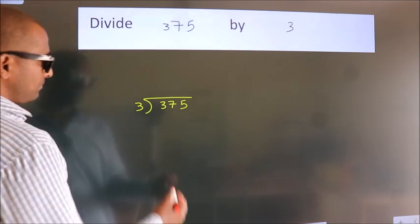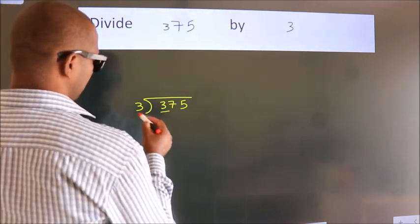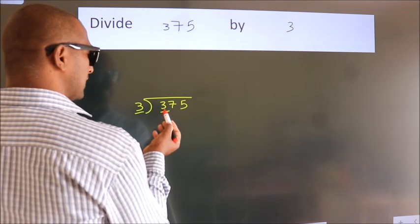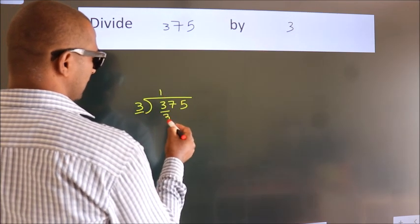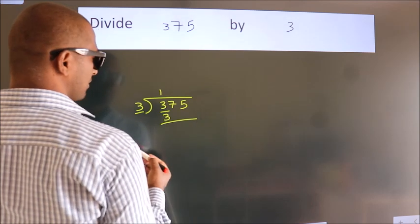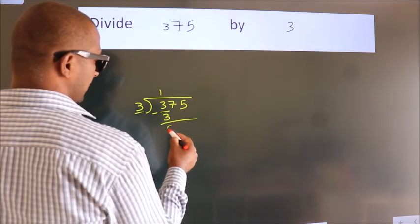Next. Here we have 3. Here 3. When do we get 3? In 3 table. 3 once, 3. Now, we should subtract. We get 0.